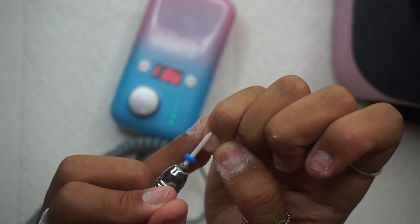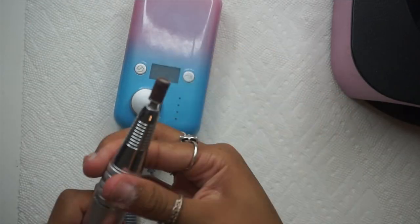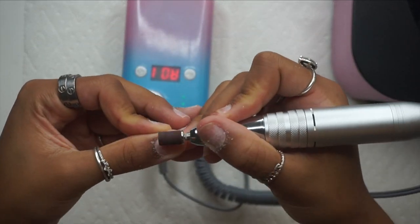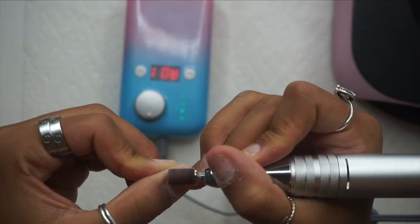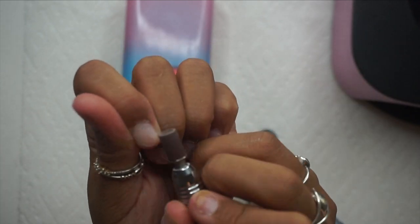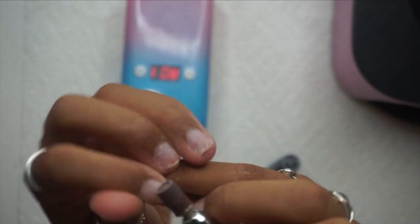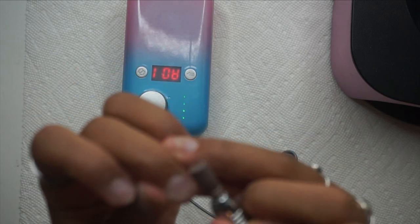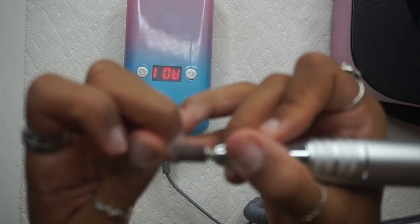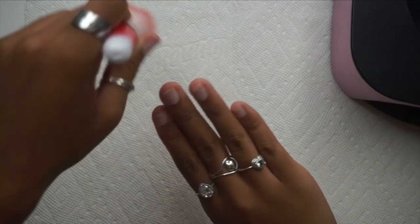Next I go in with a sanding bit, and this is where I'm going to completely take off all the shine on my nails. If you have residue on there, you want to make sure you get that off. I'm going in with a fine nail grit on the lowest speed possible. You want to make sure you go on the lowest setting because you don't want to damage your nails.